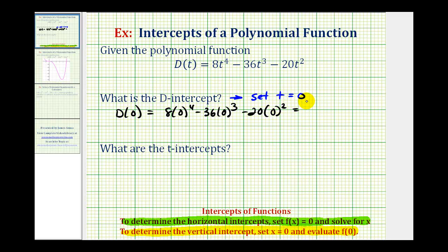This equals zero. If D(0) = 0, this tells us our d-intercept is the origin, so the coordinates are (0, 0).